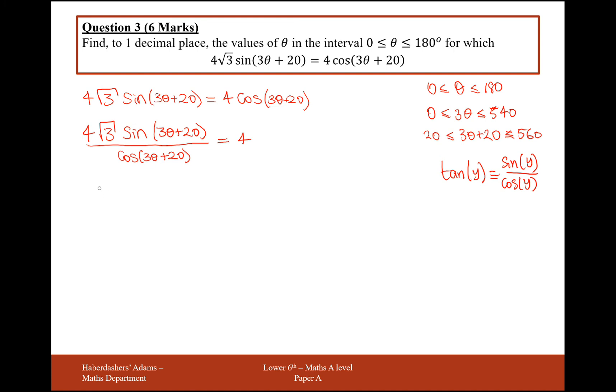So what I would like now is to change this sine over cos into a tan of 3θ + 20. But in order to do that, I need to get rid of this 4√3 as well. So I'm going to divide through by 4 and then divide through by √3. And what I'll get is 1 over √3 as the final answer at that point there.